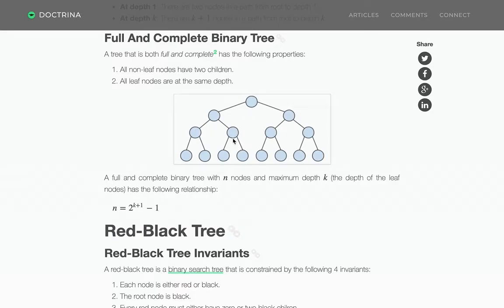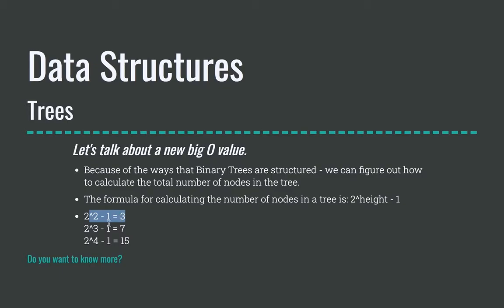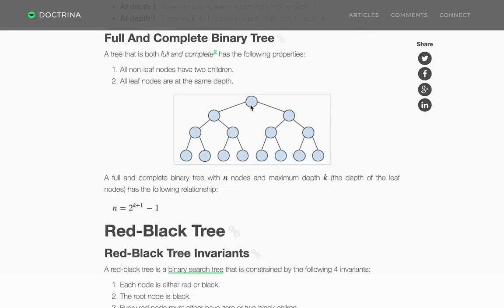Counting through the diagram, we get seven total nodes for height three. And going back, two to the power of four is 16 minus one is 15. And this has height four, so there should be 15 total nodes — confirmed by counting. Okay, cool. So we know that formula is working.